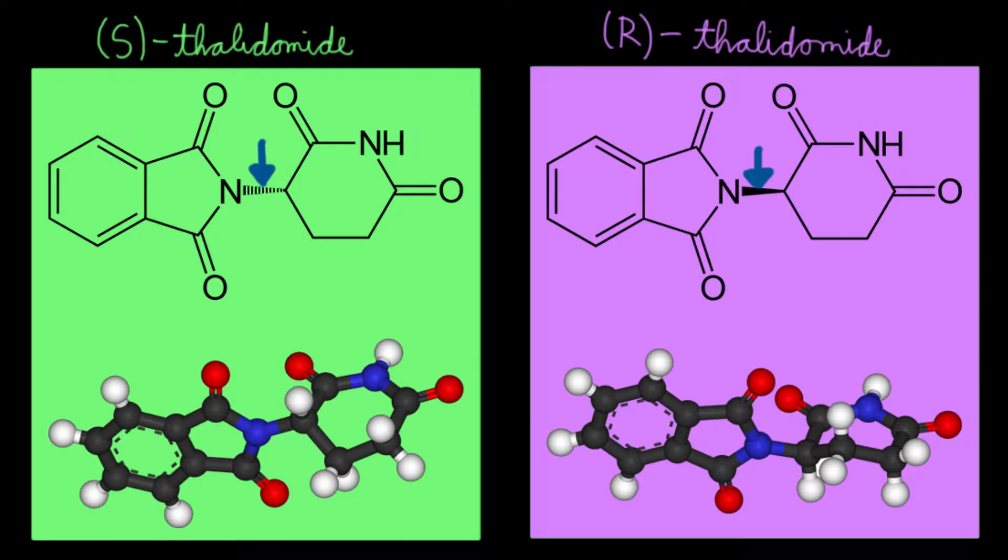And just because of the simple change in conformation, the S version was found to lead to terrible birth defects when consumed by mothers. And because of this, drug companies now try to make sure that the active ingredient in their drug is only one particular enantiomer.